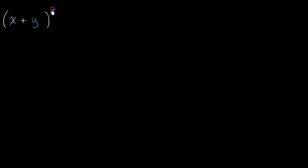I'm going to take x plus y to the seventh power. That's going to have eight terms. X plus y to the first power has two terms — it's a binomial. X plus y squared has three terms. X plus y to the third power has four terms. So this is going to have eight terms. Let me create little buckets for each of the terms. These aren't the coefficients — these are just the buckets.